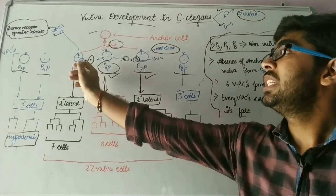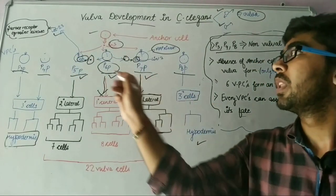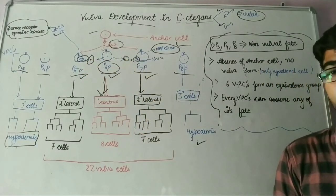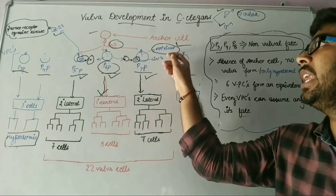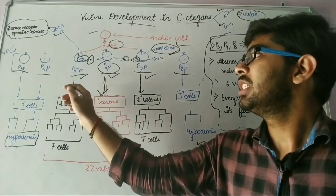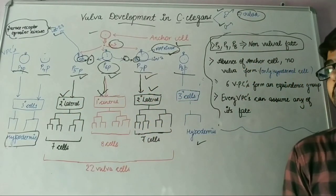Now, this LIN12 protein is activated and LIN12 protein will induce phosphate protein and inhibit this map kinase pathway. That's why there is secondary lateral fate found by P5P and P7P cells.